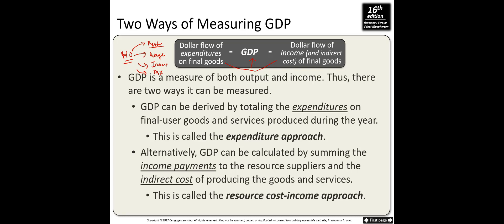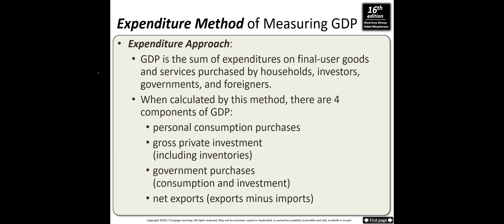GDP is a measure of both output and income. GDP can be derived by totaling the expenditures on final user goods and services produced during the year — this is called the expenditure approach. Alternatively, GDP can be calculated by summing the income payments to resource suppliers and the indirect costs of producing goods and services — this is called the resource cost-income approach. In the expenditure approach, GDP is the sum of expenditures by households, investors, governments, and foreigners. Household spending is called consumption.